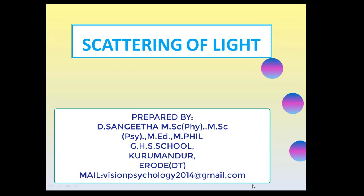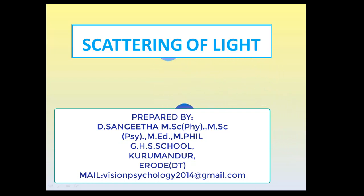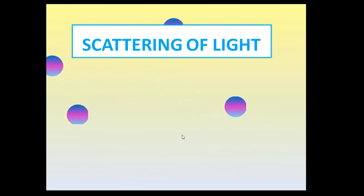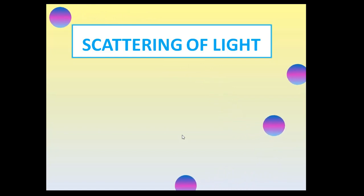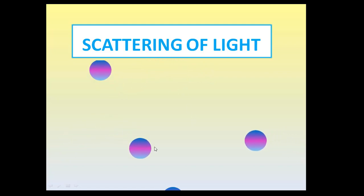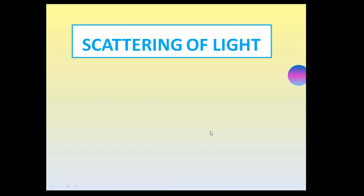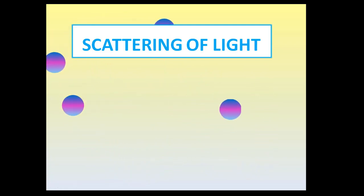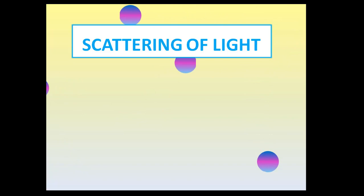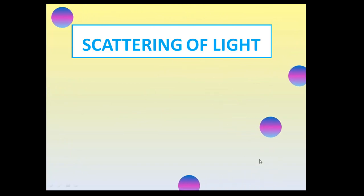Welcome friends. In this class we are going to deal with the scattering of light. We know the phenomena of reflection and refraction. I am going to explain how reflection and refraction are completely different from scattering of light. These particles in the atmosphere can be called as scatterers because when light rays enter the atmosphere, these particles scatter light, and this phenomenon can be called scattering of light.